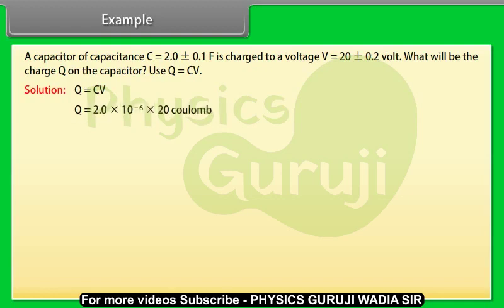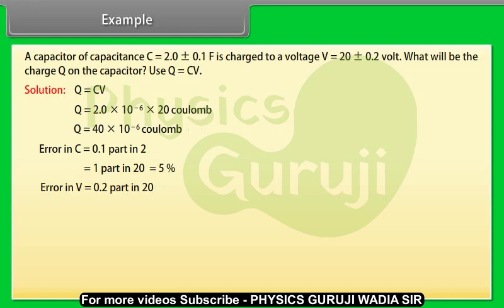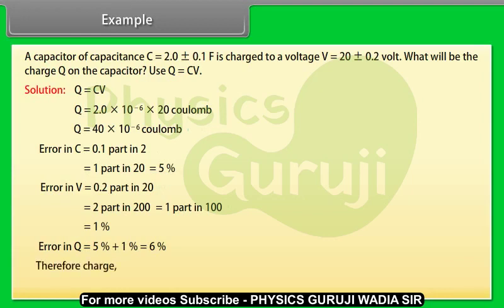Let us see the solution. Q equals CV. On calculating we get Q equals 40 into 10 to the power minus 6 coulomb. Error in C is equal to 0.1 part in 2 equals 5 percent. Error in V is equal to 0.2 part in 20 equals 1 percent. Error in Q equals 5 percent plus 1 percent equals 6 percent. Therefore charge Q equals 40 plus minus 2.4 into 10 to the power minus 6 coulomb.